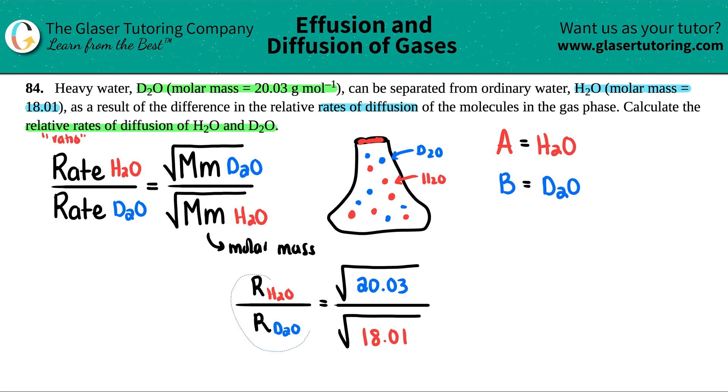So what maybe I can do is I could just copy this. And basically, I could plug this into my calculator in one shot. So let's see what I get. So the square root of 20.03 divided by the square root of 18.01. And I get roughly, I see four sig figs for the molar masses. So I'll give four sig figs, 1.055.